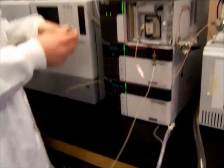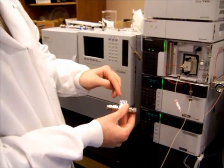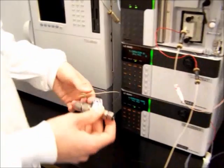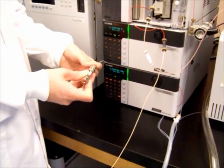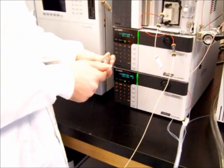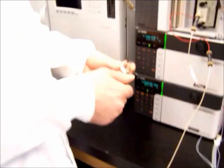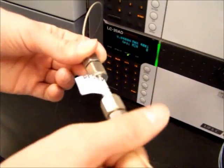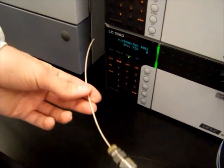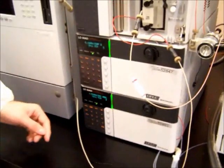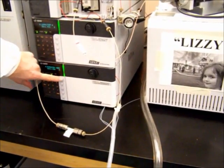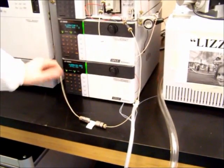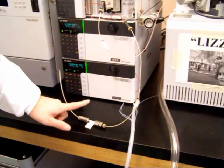Take your column, make sure it's pointed in the right direction, in the direction of flow. All columns will have some sort of an arrow on them, because the flow is only one way through the column. Screw it onto the tubing like this. Turn on the pumps. The pumps need to run for about a half an hour with fluid and solvent traveling through the pumps to equilibrate the columns.